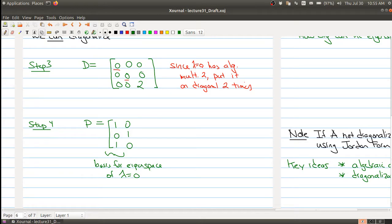And then in the last column, I want to put the basis for the column space corresponding to the eigenvalue 2. So I have negative 1, 3, and negative 1, 3, and 1.